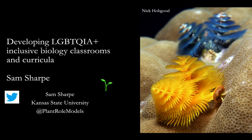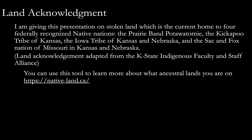I'd like to start off by acknowledging that I'm giving this presentation on stolen land, which is the current home to four federally recognized Native nations: the Prairie Band Pottawatomie, the Kickapoo Tribe of Kansas, the Iowa Tribe of Kansas and Nebraska, and the Sac and Fox Nation of Missouri and Kansas and Nebraska. Due to the virtual nature of this conference, many of you are not in the same place as me, and if you are in North America, you can figure out which ancestral lands you're on using this website.